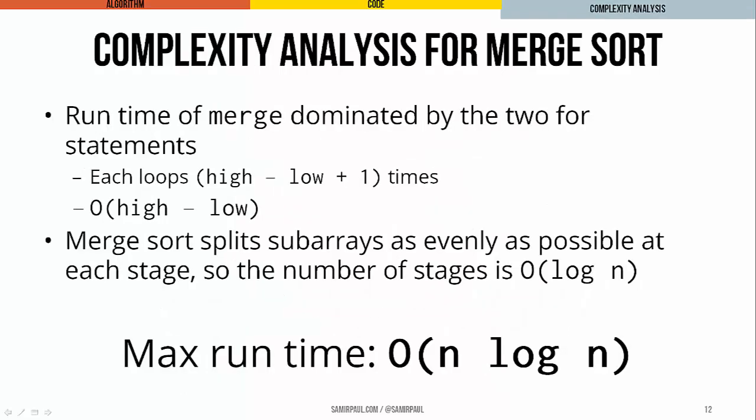If we want to think about the time complexity of merge sort, we break it into two pieces. First, the merge method is dominated by two for loops, each running high minus low plus one times, so merge's runtime is roughly O(n). All the merges at a single stage take roughly n time. Second, because merge sort splits subarrays as evenly as possible at every stage, we end up with O(log n) number of stages. So the maximum runtime for merge sort is O(n log n) — n for running merge, and log n for the number of subdivisions.